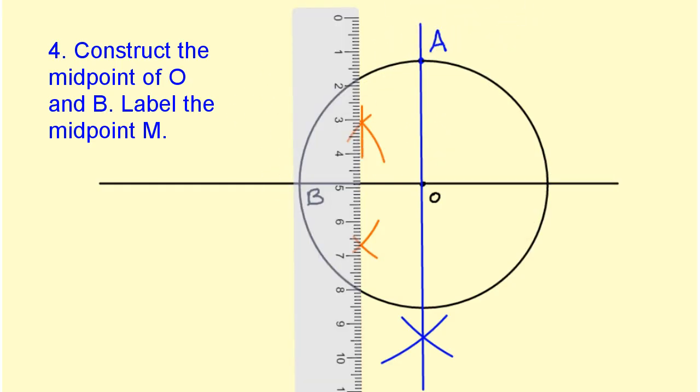I will take my straight edge and I will draw my line. I'm just going to draw a short line because it's not really the line that I'm interested in, but it's the point of intersection. I'm going to label that point M.